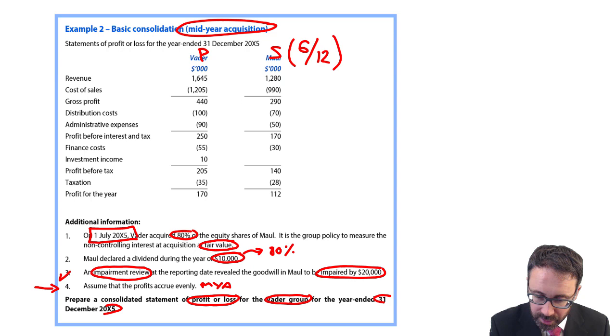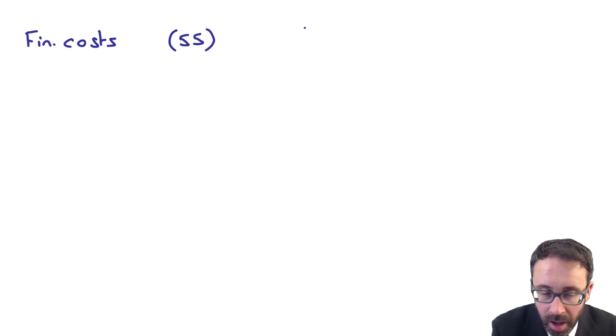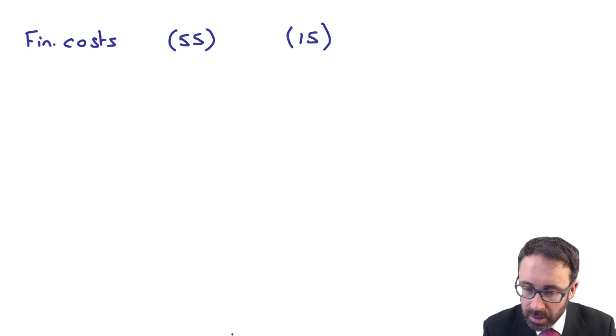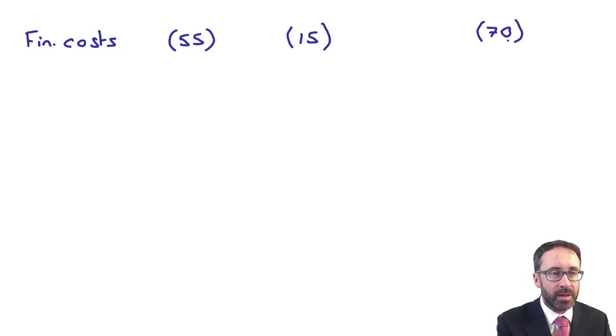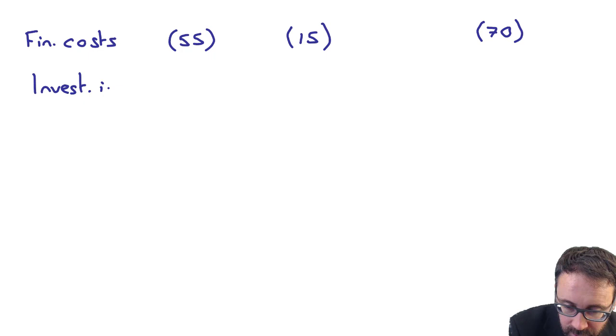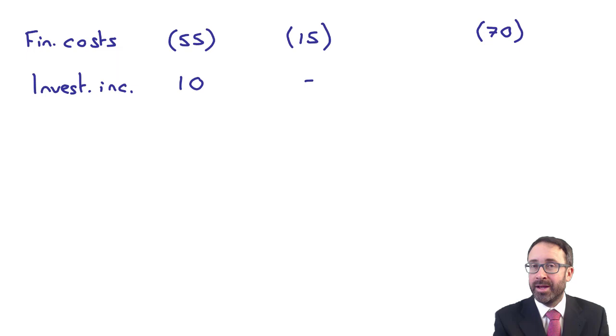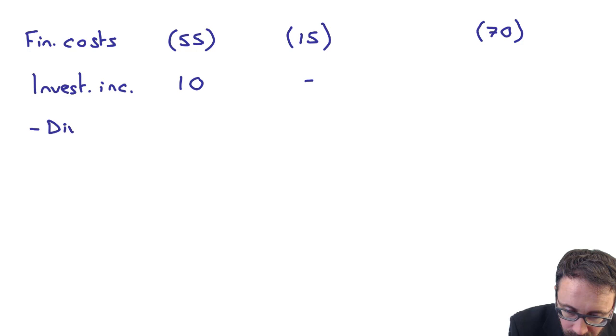I've next got my finance costs and my investment income. So we've got the finance costs of 55 in the parent, the 30 in the subsidiary. So that means it's 15 in the group accounts. So when I consolidate, does that go through and give me 70? Again, this is where you need to switch on. You've got your investment income. It's 10 in the parent. There's actually nothing in the subsidiary. If there were to be in the subsidiary, you would include it on a line by line basis.